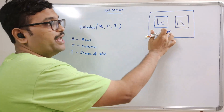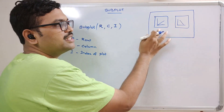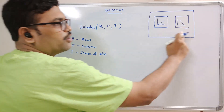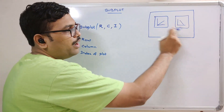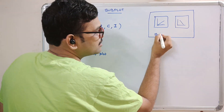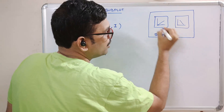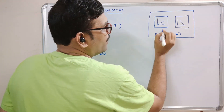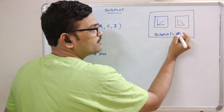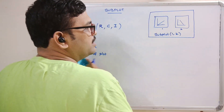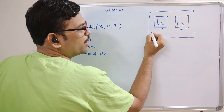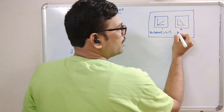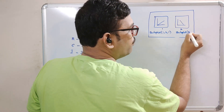For example, if you want to display two plots in a single row, this implies two plots are represented in a single row — one row and two columns. So we write it as subplot of one row, two columns. The first plot has index one and the second plot has index two. So we write subplot(1, 2, 1) and subplot(1, 2, 2).